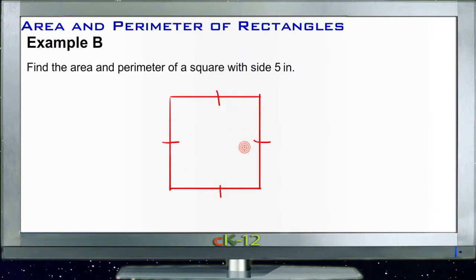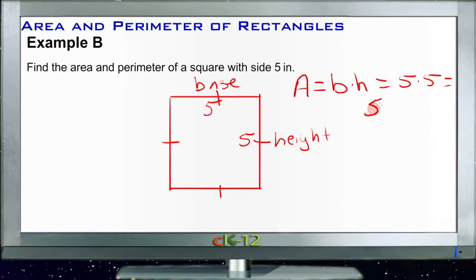So if our formula is base times height, if we call this the base, and this the height, and this is 5 units, and this is 5 units, then it really just ends up being for the area, we just have something times itself. If the area is B times H, then that's just 5 times 5. And the shortcut for 5 times 5 is 5 squared.